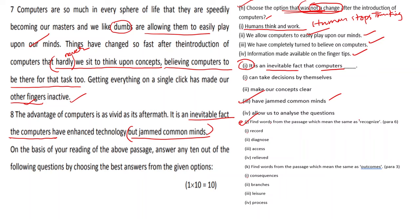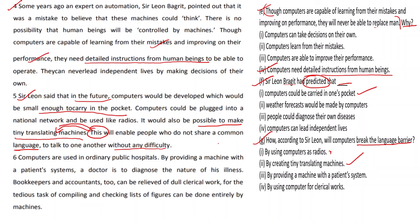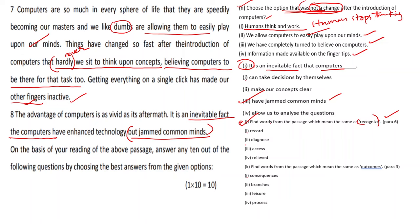Question J or 10: 'Find words from the passage which mean the same as recognize — from paragraph 6.' Go to paragraph 6. To find the meaning of a word, simply write the word near the paragraph and search. The passage says: 'By providing a machine with a patient's symptoms, a doctor is able to diagnose...' — diagnose means to recognize the nature of his illness. So the answer is 'diagnose.'